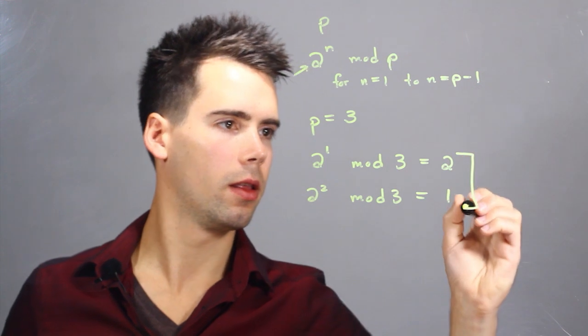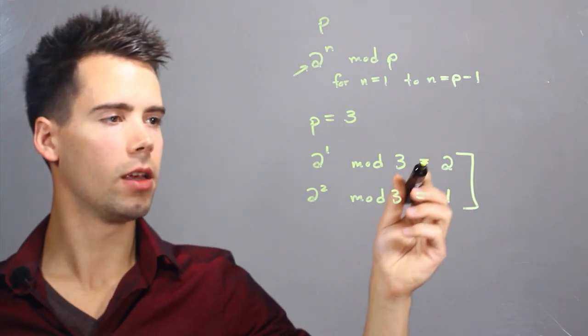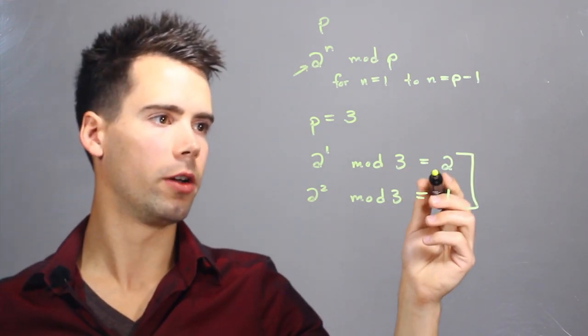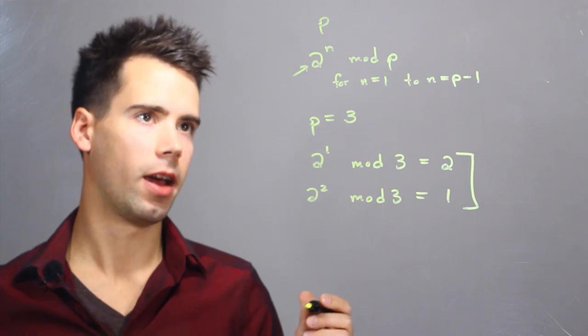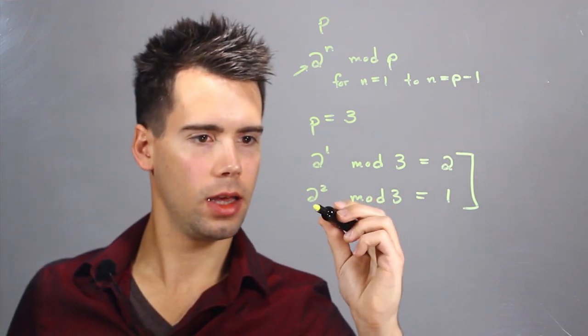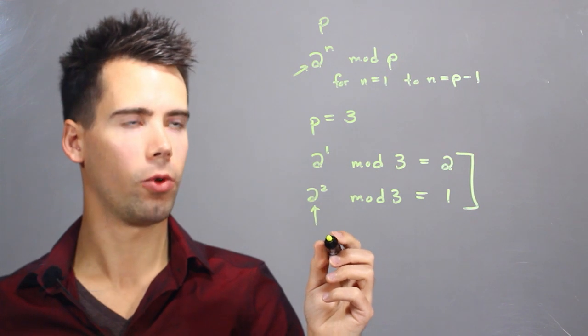So we find that each outcome is unique and it's in the range from 1 to 2. So we find that 2 is a primitive root of 3.